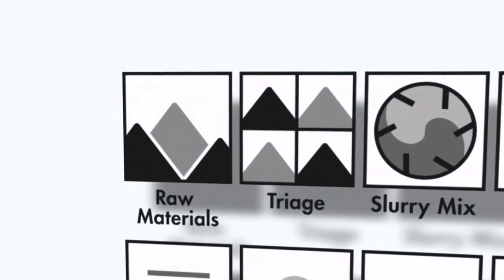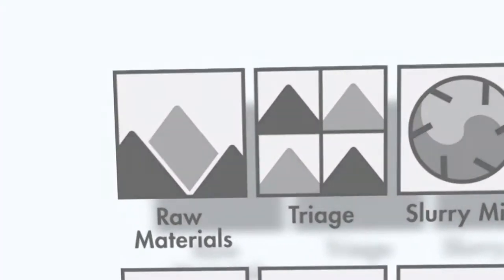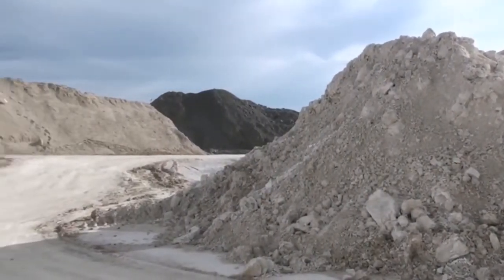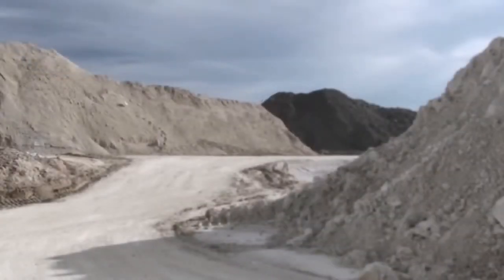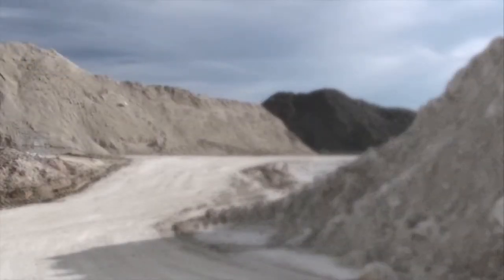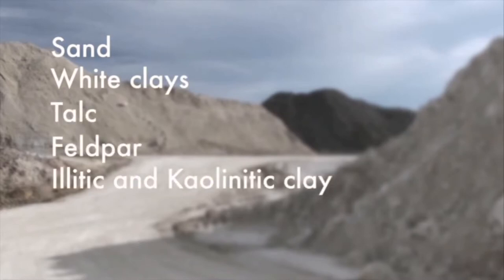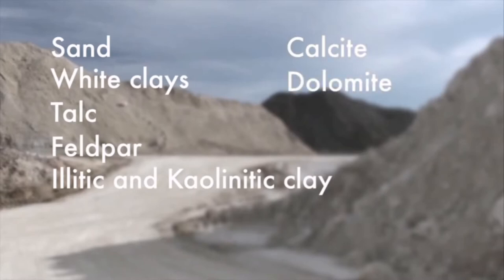In this series, we will attempt to demystify the process of manufacturing ceramic tiles. Tiles are made from basic components that are readily available from Mother Earth. Raw materials such as sand, white clays, talc, feldspar, ellitic and kaolinitic clays, calcite, and dolomite are quarried and refined.